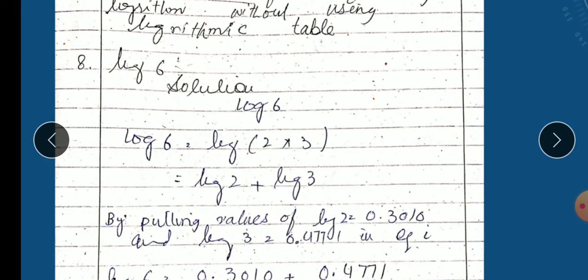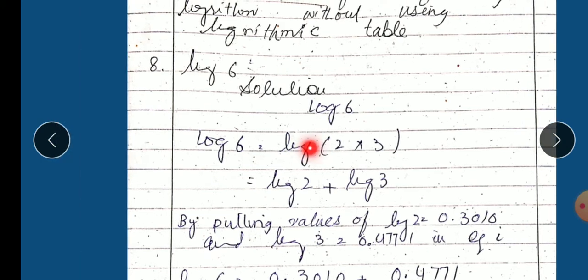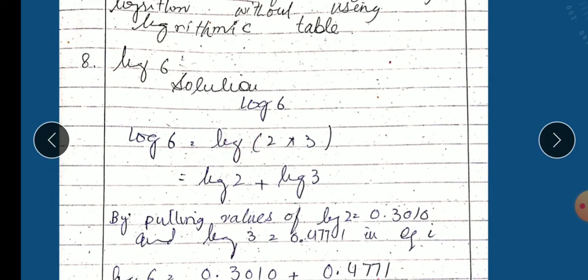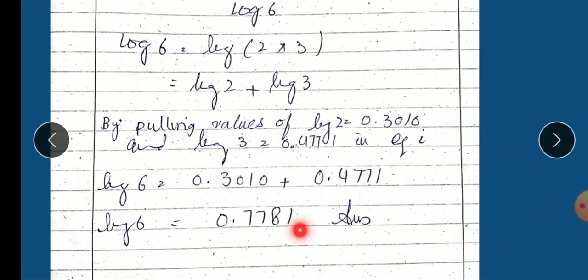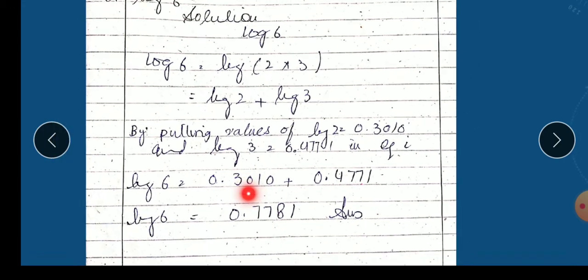Without using the table, values are given so we need to convert them. We need to use the given values and find the factors of the number. For log6, six is the factor of what? Two multiplied by three equals six. When two numbers are multiplying, we use the multiplication rule in log. Put the values of log2 and log3. Put the values: log6 is equal to 0.7781. We solved it without using the table.